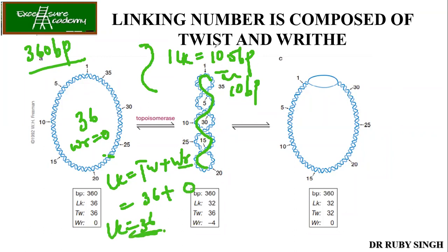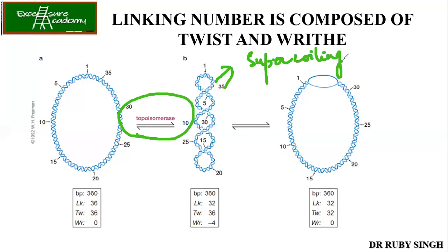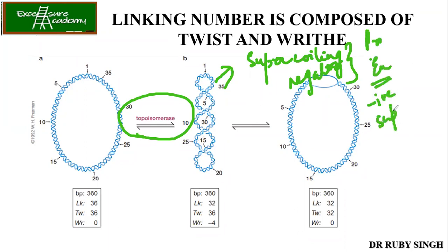In vivo, topoisomerase helps in removing supercoiling. This is negative supercoiling. In both bacteria and eukaryotes — prokaryotes and eukaryotes — you see the presence of negative supercoiling. Only in the case of extreme thermophiles do you see positive supercoiling.